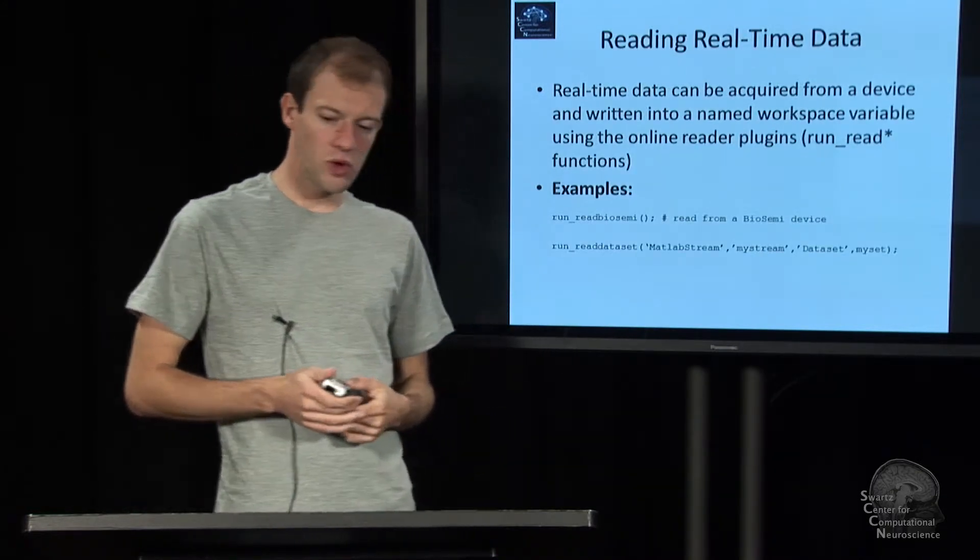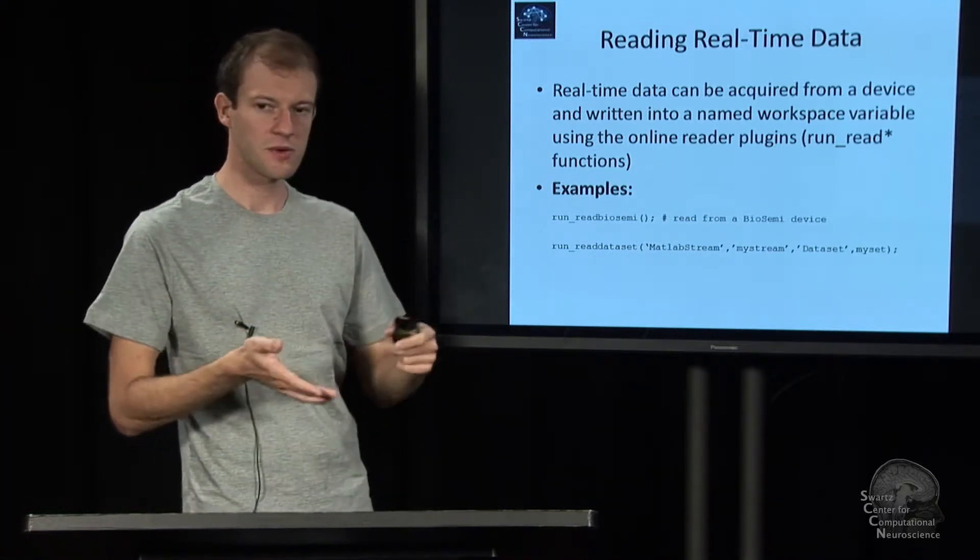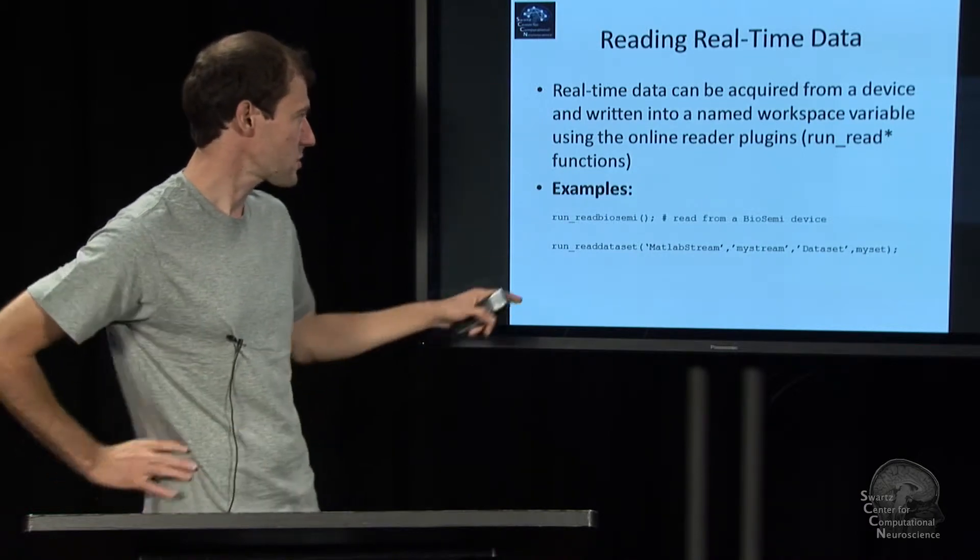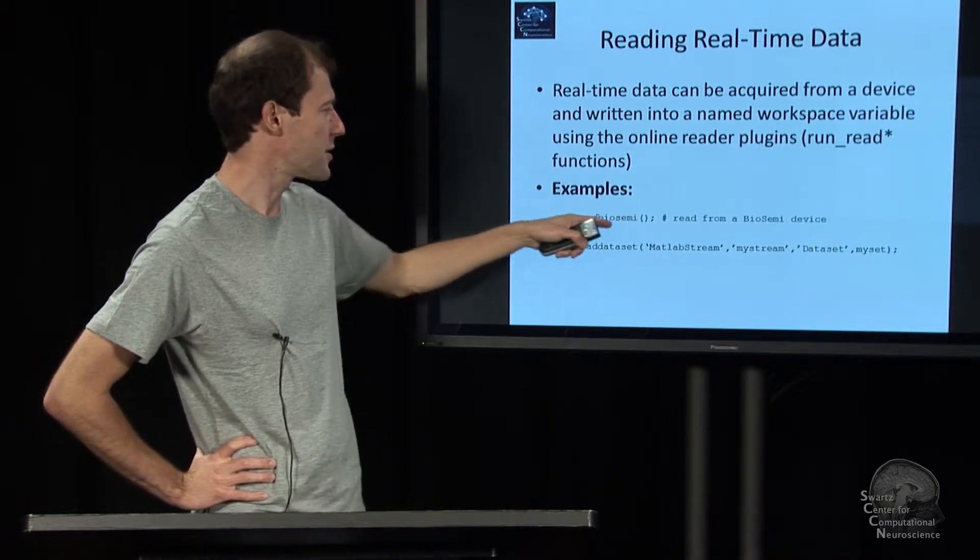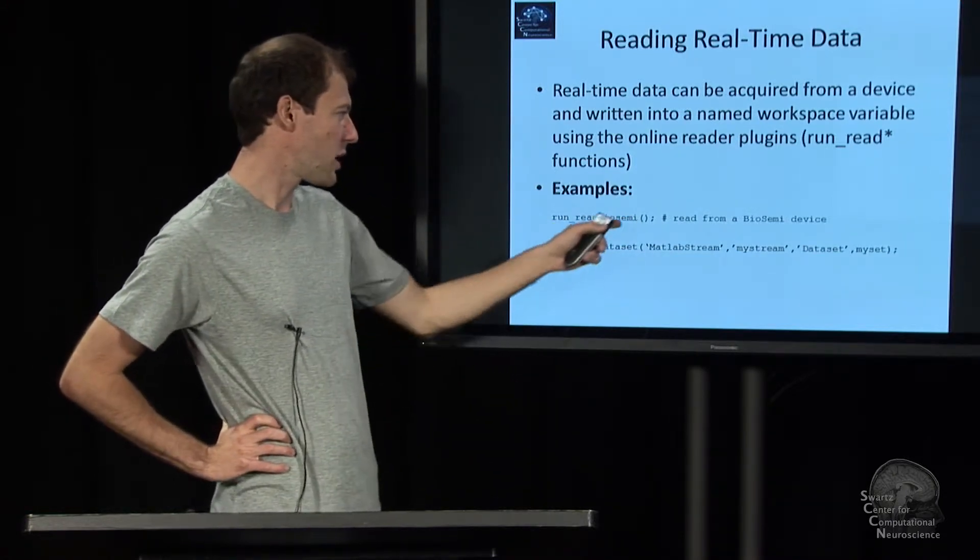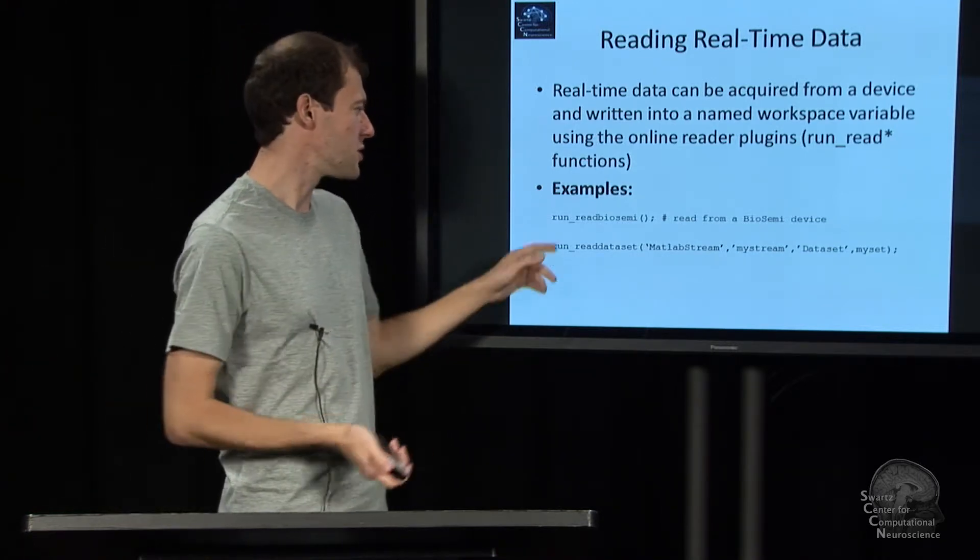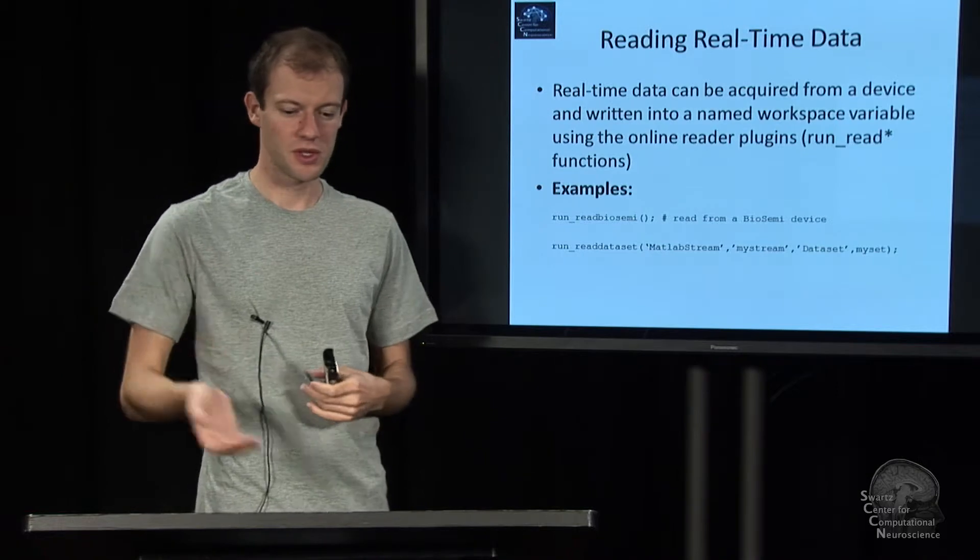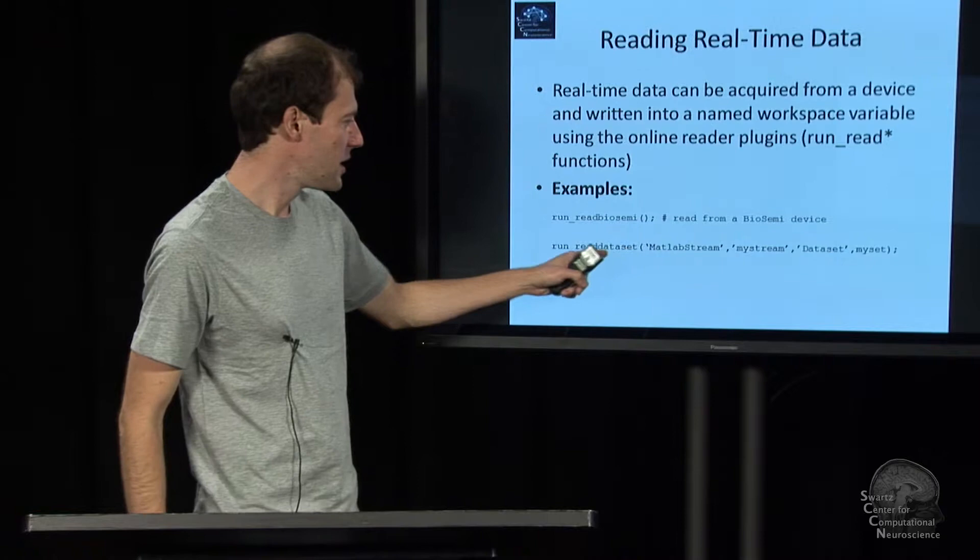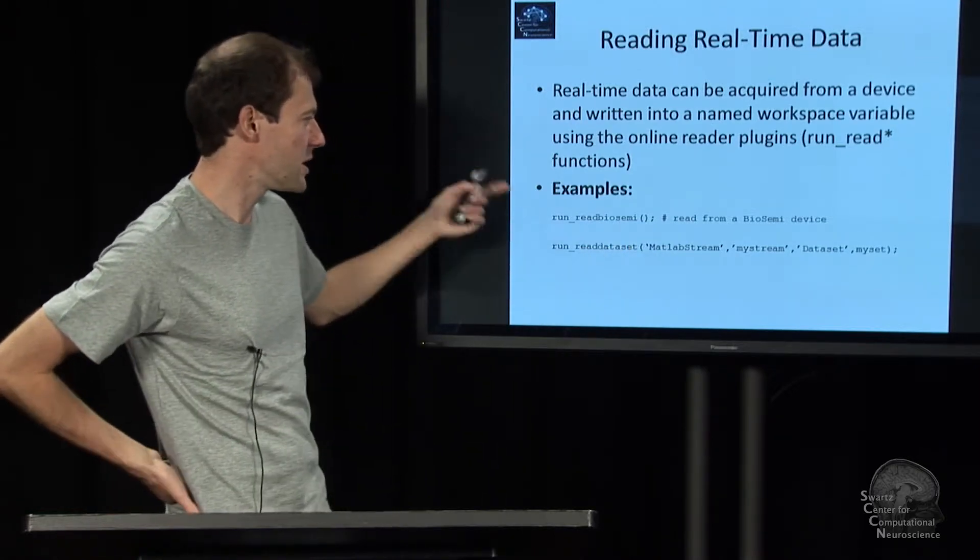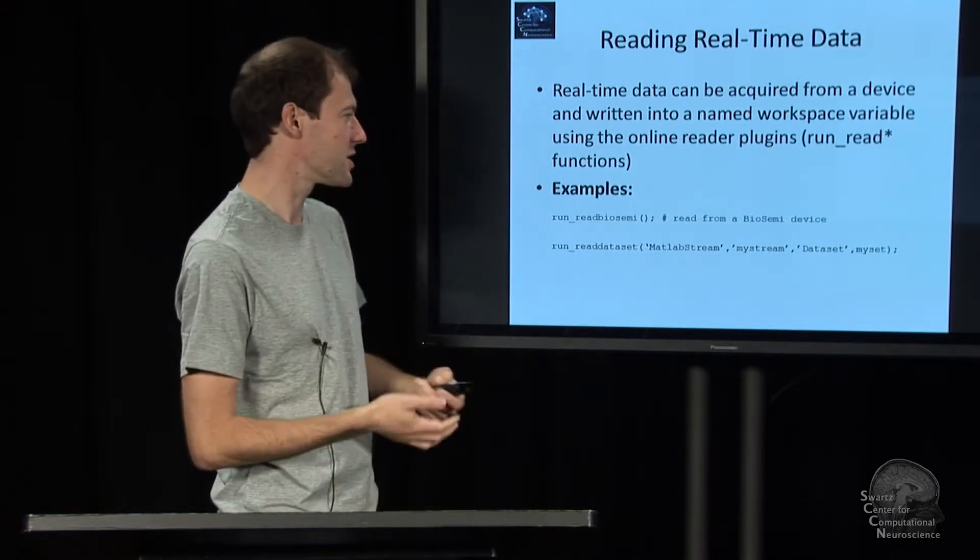To do anything in real-time, you will want to use the real-time plug-ins, which are online readers and online writers. So to read stuff, it can be as simple as writing run_read_biosemi or so. It doesn't even have parameters. All it'll do is check whether there's an amplifier plugged in. It'll start to stream in the background which streams from this. And then you can go on and apply models to that. Or here's a useful example. This is playing back a data set. It's really practical, of course, if you want to do sort of pseudo-online tests to check if it's fast enough or if it crashes or something like that.